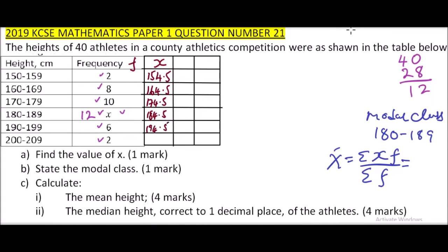Then we multiply X and F, or FX. So this column will be for XF. When you multiply here you get 309.